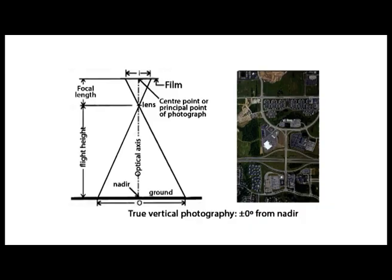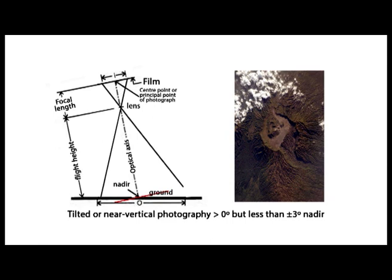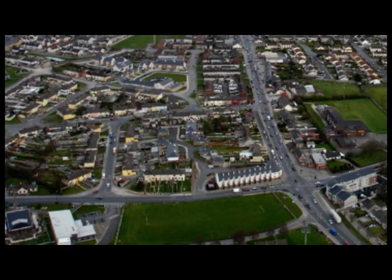In photogrammetry there are three types of aerial photographs classified on the basis of inclination of the camera axis with the vertical or nadir point. Number 1: true vertical photography, which is plus or minus 0 degrees from nadir. Number 2: tilted or near-vertical photography, which is greater than 0 degrees but less than plus or minus 3 degrees, and is most commonly used. Number 3: oblique photography, which is between plus or minus 35 degrees and plus or minus 55 degrees of nadir.